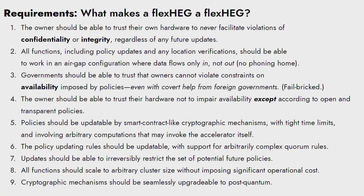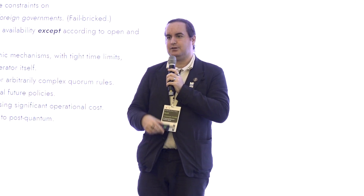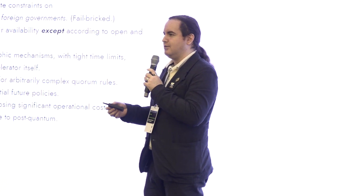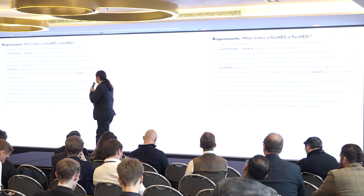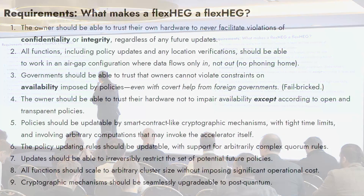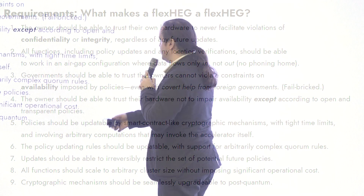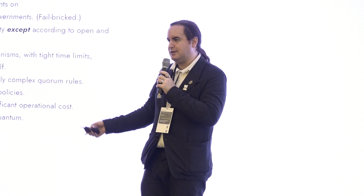The fifth criterion is that policy should be updatable by a smart contract-like cryptographic mechanism — this is what makes it a flexible hardware-enabled governance mechanism, not baking policy into firmware. Policy should be updatable quite fast, like every 10 minutes, so it can be used as a mechanism for emergency response to some kind of AI catastrophe. The policy updating rules should also be updatable, so this can begin as perhaps a unilateral or minilateral mechanism and evolve toward a more multilateral governance mechanism without needing to retool and produce a new batch of hardware.